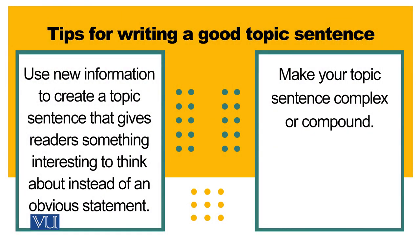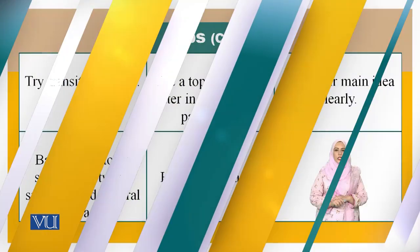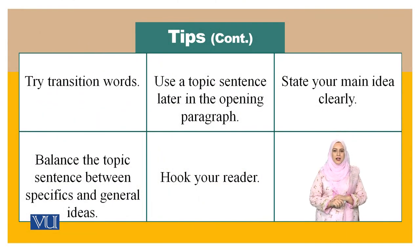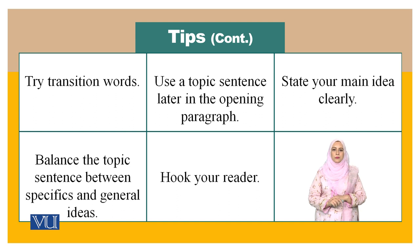I hope you are done with the activity. Now I would like to give you a few tips for writing a good topic sentence. Whenever you are writing a topic sentence, try to make a complex or compound sentence because a simple sentence cannot give more information. You can use a topic sentence later in the paragraph. Try to state your main idea clearly and explicitly. Try to balance the topic sentence by giving supporting ideas and factual information. Use language that hooks your reader.